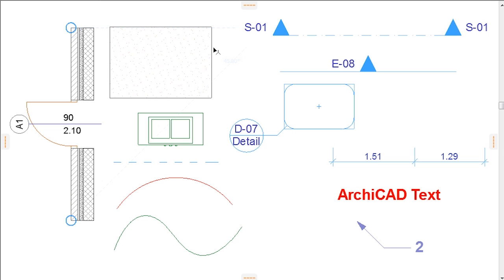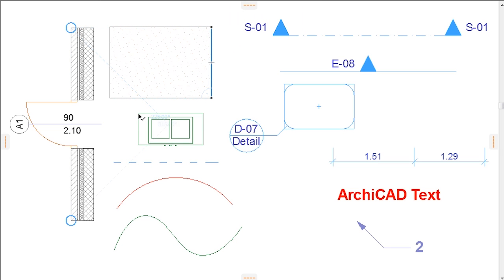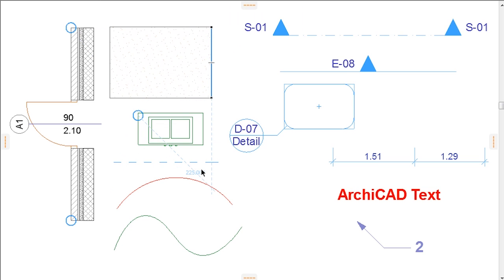However, it is not possible to mark the nodes and edges of 2D annotation elements, such as dimensions and labels and markers, as Snap References.